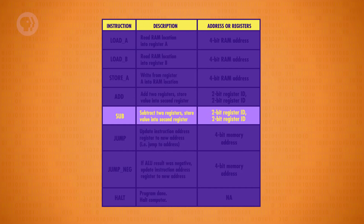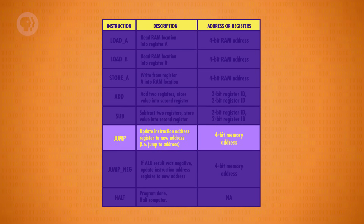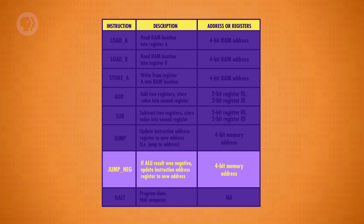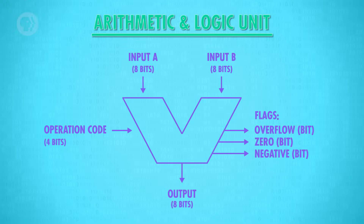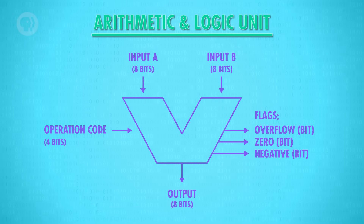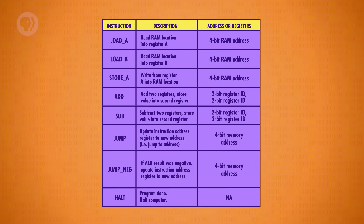So let's add some more instructions. Now we've got a subtract function, which like ADD specifies two registers to operate on. We've also got a fancy new instruction called jump. As the name implies, this causes the program to jump to a new location — useful if you want to change the order or skip some instructions. For example, a jump zero would cause the program to go back to the beginning. At a low level, this is done by writing the value specified in the last four bits into the instruction address register, overwriting the current value. We've also added a special version of jump called jump negative, which only jumps if the ALU's negative flag is set to true. The negative flag is only set when the result of an arithmetic operation is negative. And finally, computers need to be told when to stop processing, so we need a halt instruction.